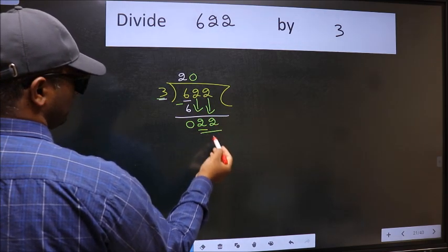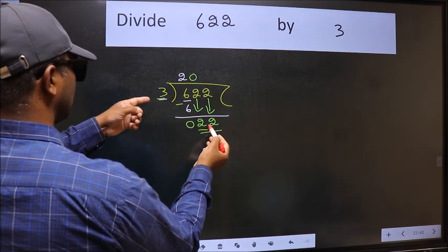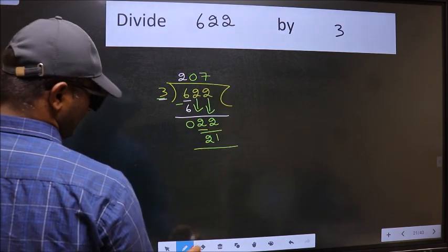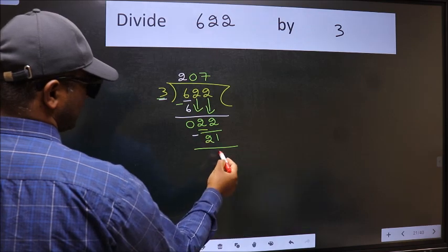Now 22. A number close to 22 in the 3 table is 3 7's 21. Now we should subtract. We get 1.